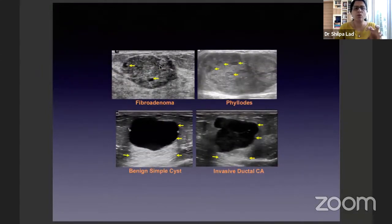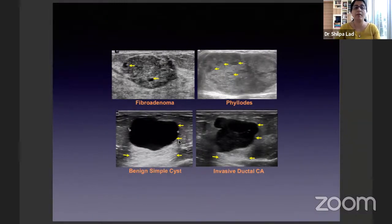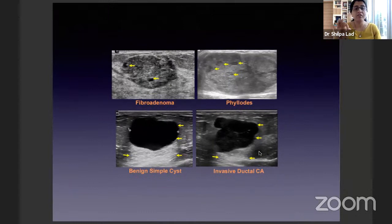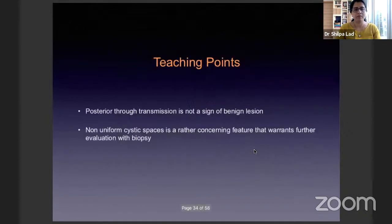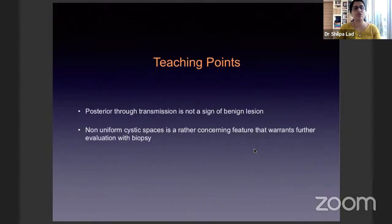To give an overview: a classic fibroadenoma, a phylloides with lobulations and non-uniform cystic spaces, a benign simple cyst, or an invasive ductal carcinoma — there can be an overlap of features. If you look at the smaller nuances, you will be able to make a decision as to which goes to biopsy. Important point: posterior through-transmission is not a sign of a benign lesion, and non-uniform cystic spaces can be a rather concerning sign requiring biopsy.